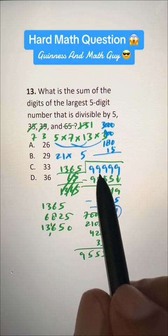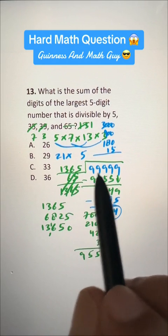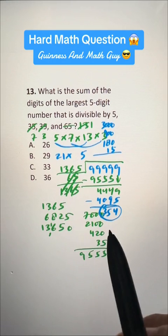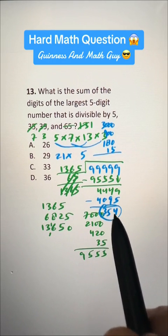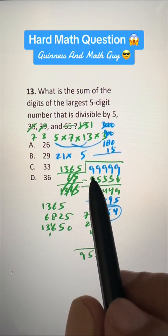when we divide 99999 by 1365. It means this is not divisible by 1365, we get the extra 354. So, let's subtract this 364 from 99999,